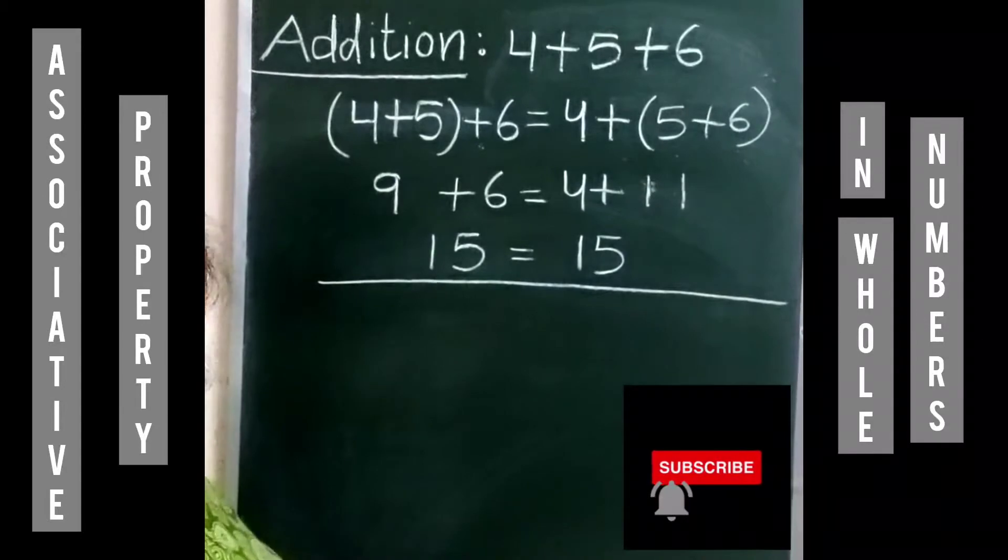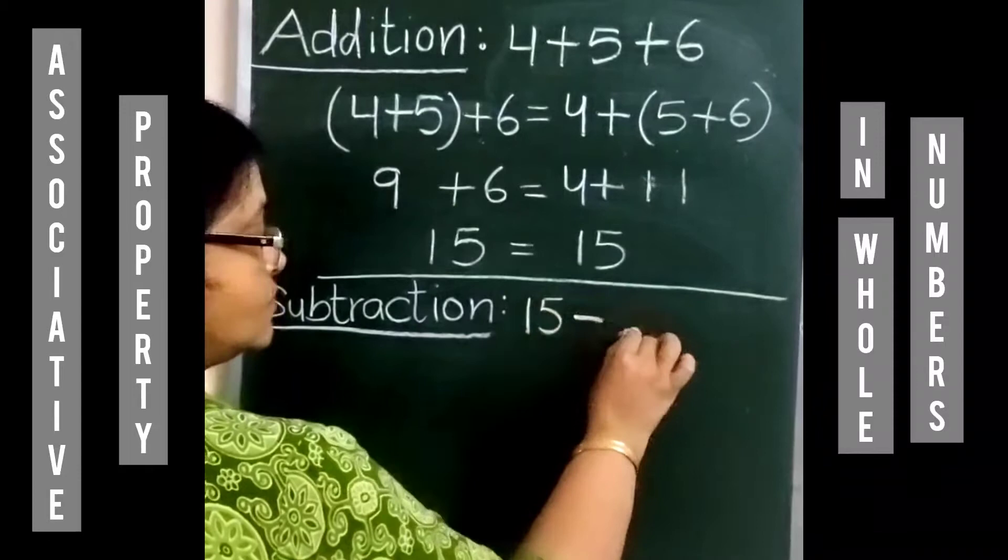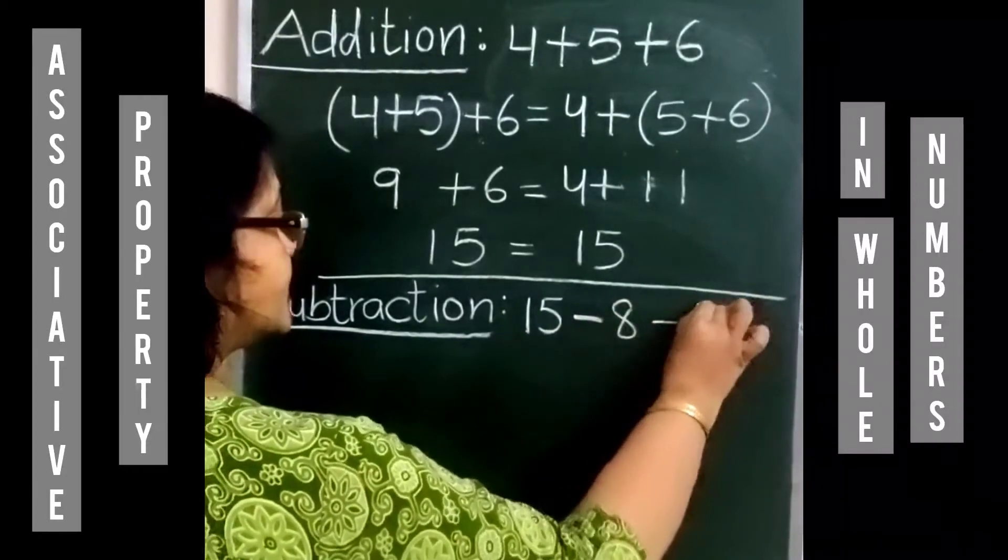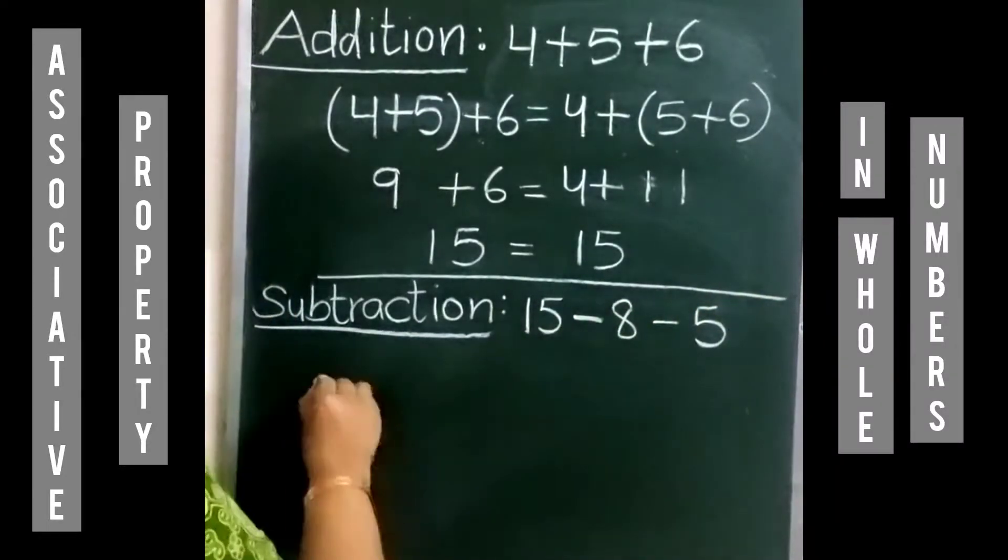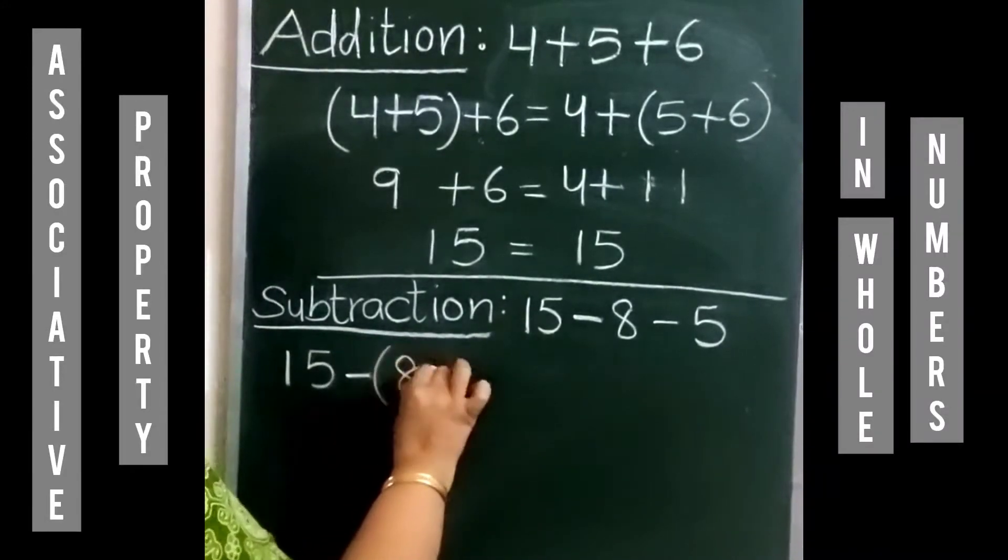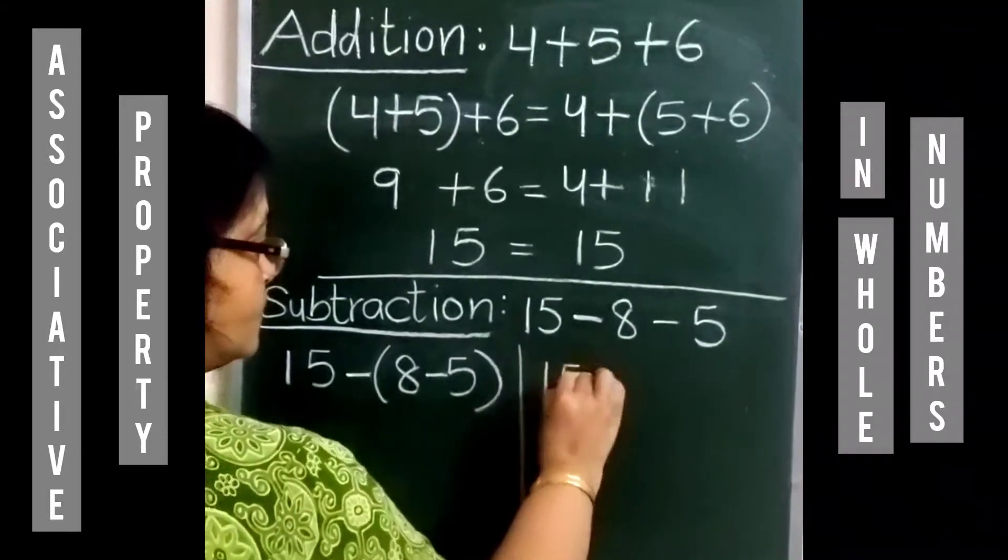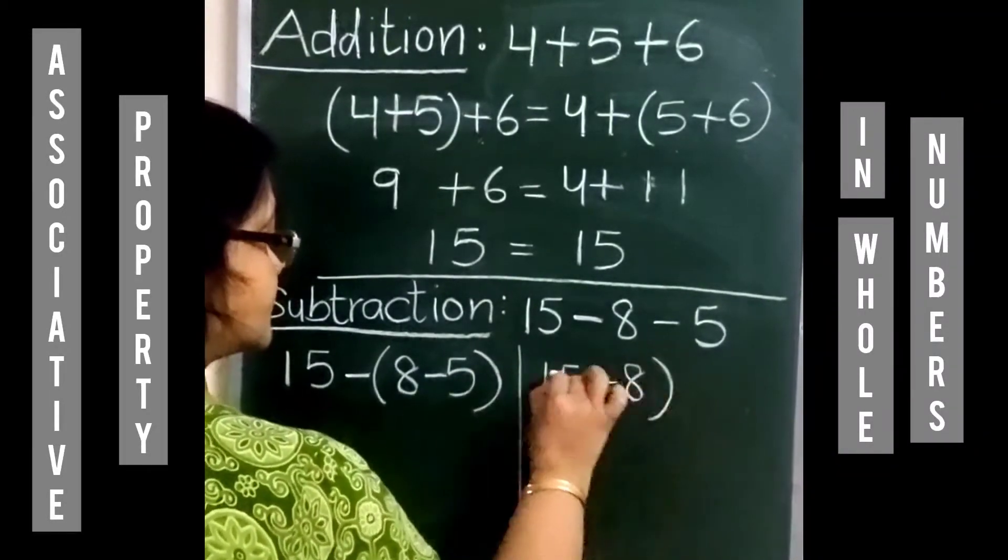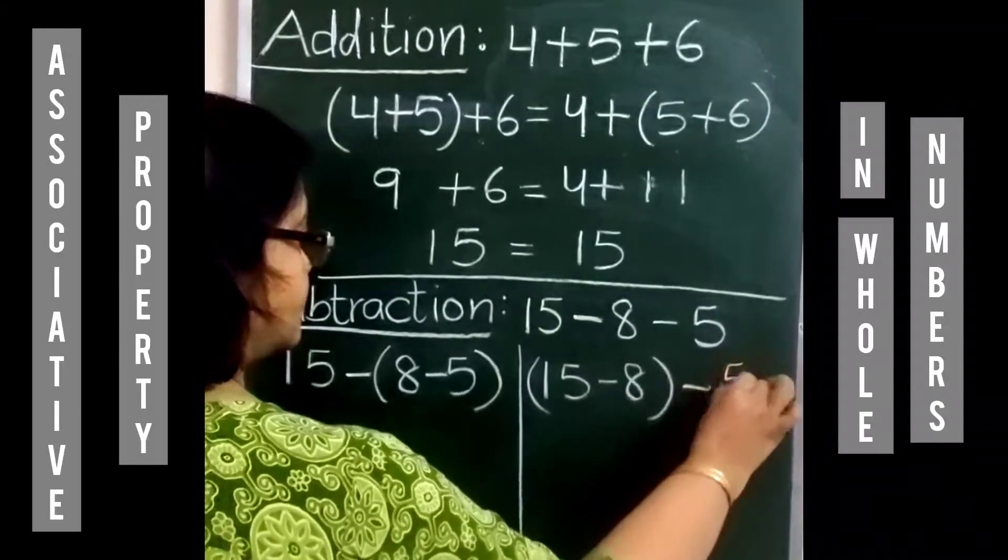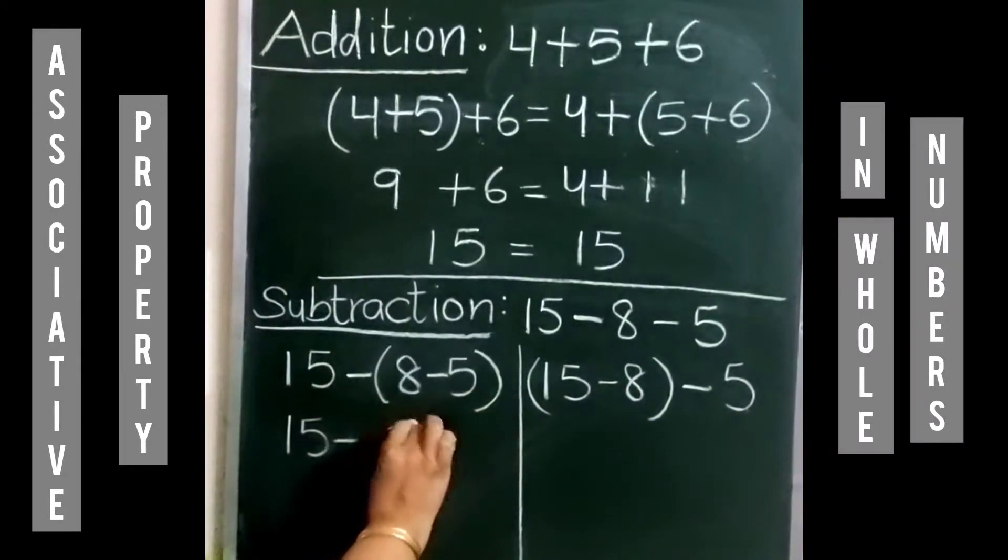Is it true for subtraction also? For example, let's take 15 minus 8 minus 5. Now we can make groups like this: 15 minus 8 minus 5. 15 minus 8 is 7, and 7 minus 5 is 3. 15 minus 3 is equal to 12.